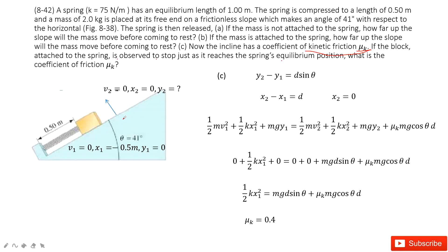We still have positions y2 and x2. The box just reaches the balanced position, so x2 is 0. We need to consider friction, so we use mu_k. We still apply energy conservation, but now initial energy equals final energy plus the thermal energy generated by friction.